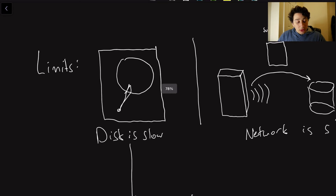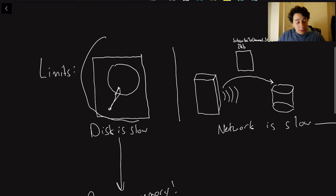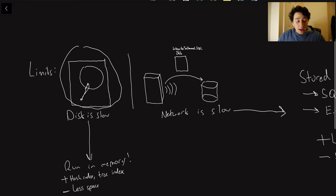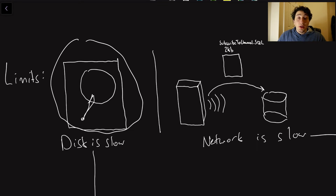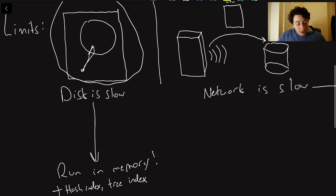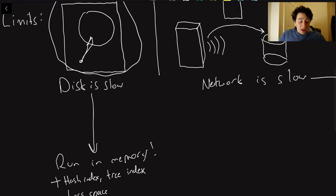So there are a couple of things that are going to limit the performance of your system if you're running everything on one core. The first thing is going to be using a disk. I've drawn this picture of a hard drive many times over. The fundamental issue with disks is that they are slow — we've got this metallic seeking disk. And as a result, it's just going to be a lot slower than using something like an SSD, or perhaps even better, literally keeping all of your data in memory.